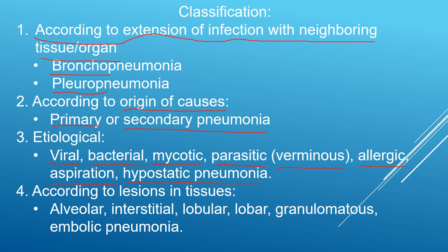The fourth type of classification is according to the presence of lesions in the tissue. If lesions are in the alveoli, it is alveolar pneumonia. Lesions in interstitial cells give interstitial pneumonia. If a particular lobe is involved, it is lobar pneumonia; if only part of a lobe is involved, it is lobular pneumonia. If fibrous tissue is involved, it is granulomatous pneumonia — just like tuberculosis. If there are blood clots causing blockage, it is embolic pneumonia.